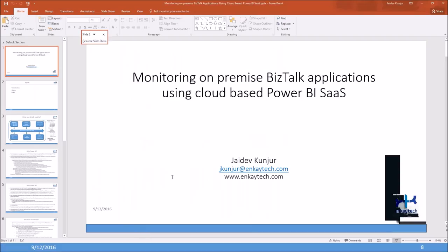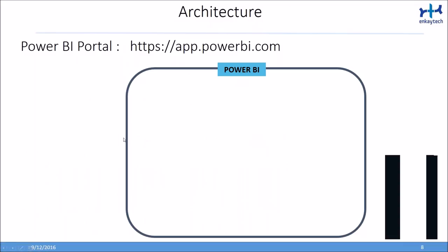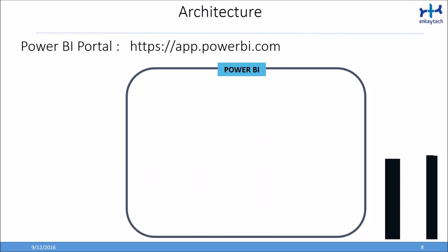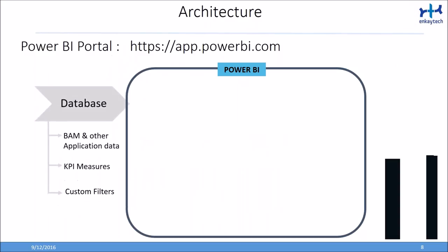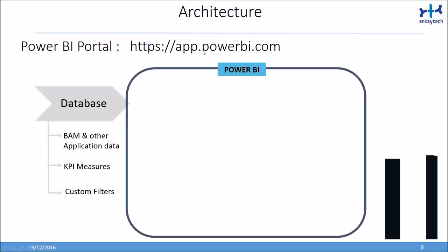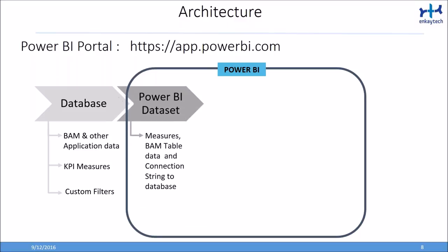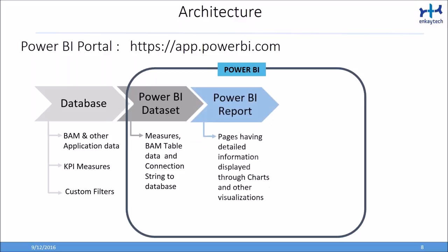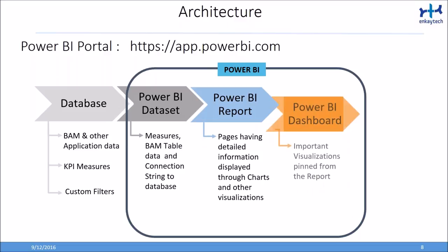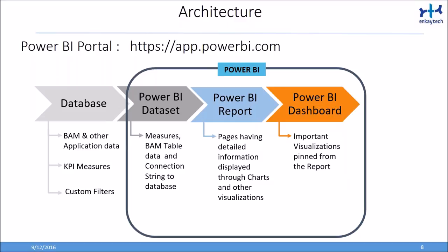This is the architecture for Power BI: end users and developers log into app.powerbi.com. You have databases — BAM, ESB exception database, or business data. You define KPIs and measures using Visual Studio and BI. Once you define measures and connect them to tables with filters, you pull those into datasets, publish the datasets, pull them into reports — which have all charts and visualizations — and then pin different charts into the dashboard. That's essentially the architecture.